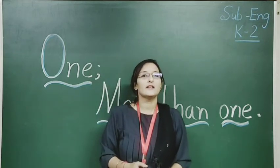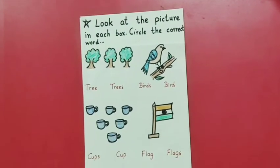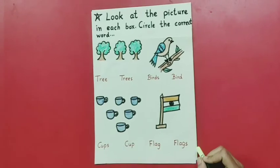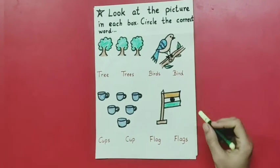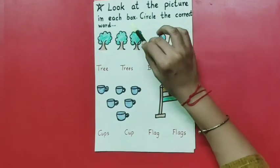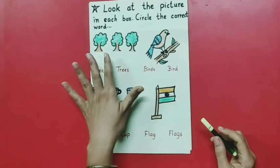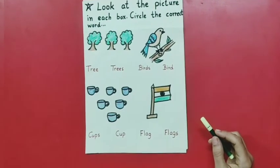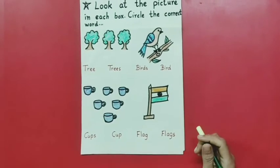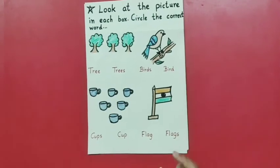We will do an activity in it. Now students, we will do an activity related to 'one' and 'more than one' in this worksheet. Look at the picture in each box and circle the correct word. We have to look at the pictures and circle the correct word.